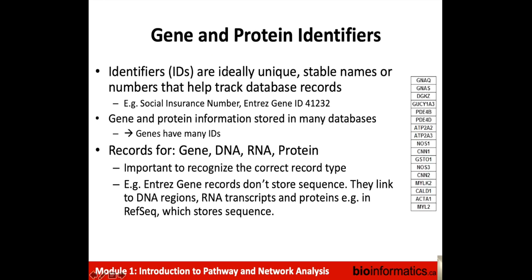To understand background information about pathway enrichment analysis, I'm going to tell you about gene identifiers, which you need to understand to help understand how gene lists work. A gene list is a list of genes, and the important concept is that it's not just a list of names, but a list of unique identifiers that allow us to understand unambiguously what genes we're talking about. Identifiers or IDs are ideally unique, stable names or numbers that help track database records — for instance, a social insurance number or an Entrez Gene ID. Gene and protein information is stored in many different databases, and thus genes have many different identifiers.